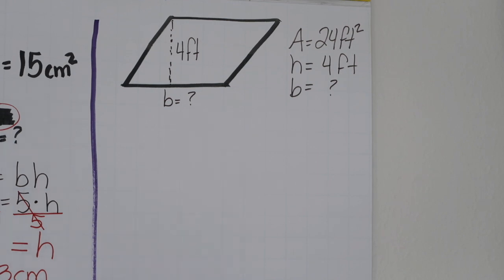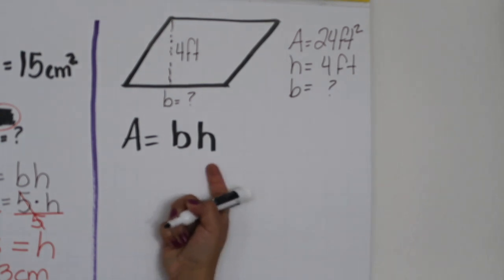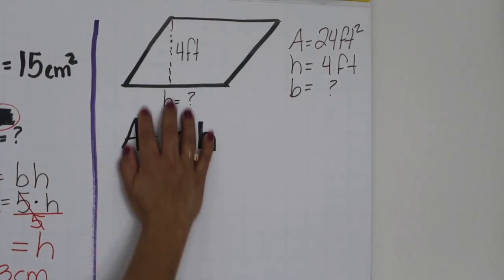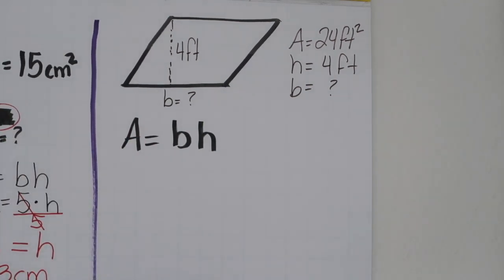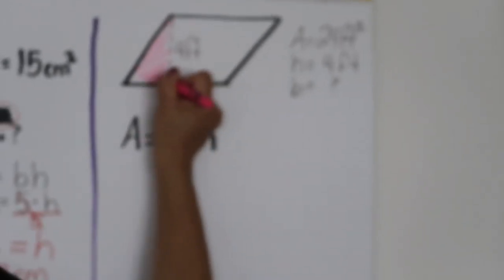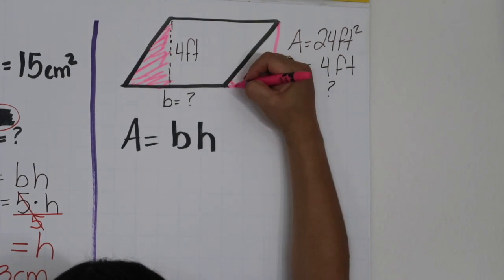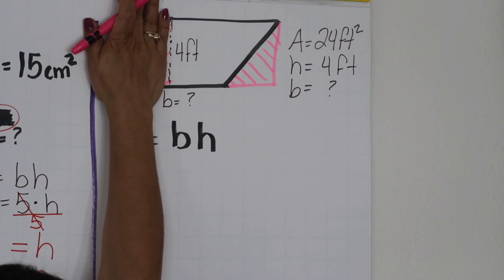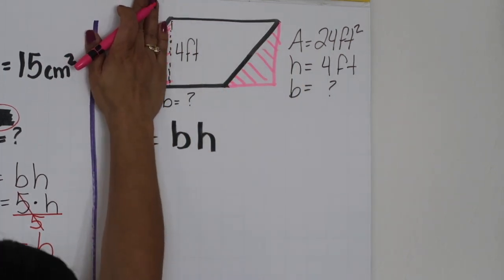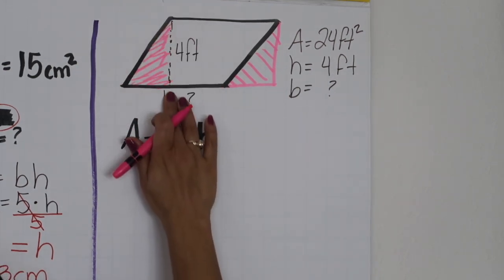We're going to start by writing the formula, which is the same as the rectangle: A equals BH, base times height. The reason we use the same formula for the parallelogram and the rectangle is that it's basically the same shape. If you take this area, reconstruct it, and put it on the other side, you have a rectangle. The base is what's on the ground, and the height is that perpendicular line.